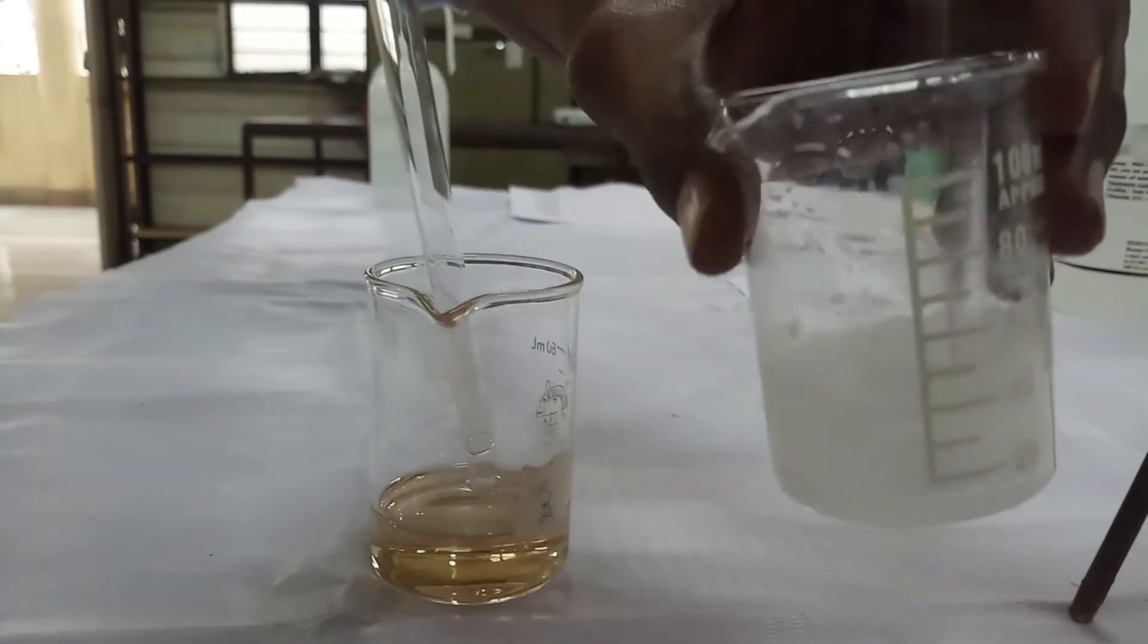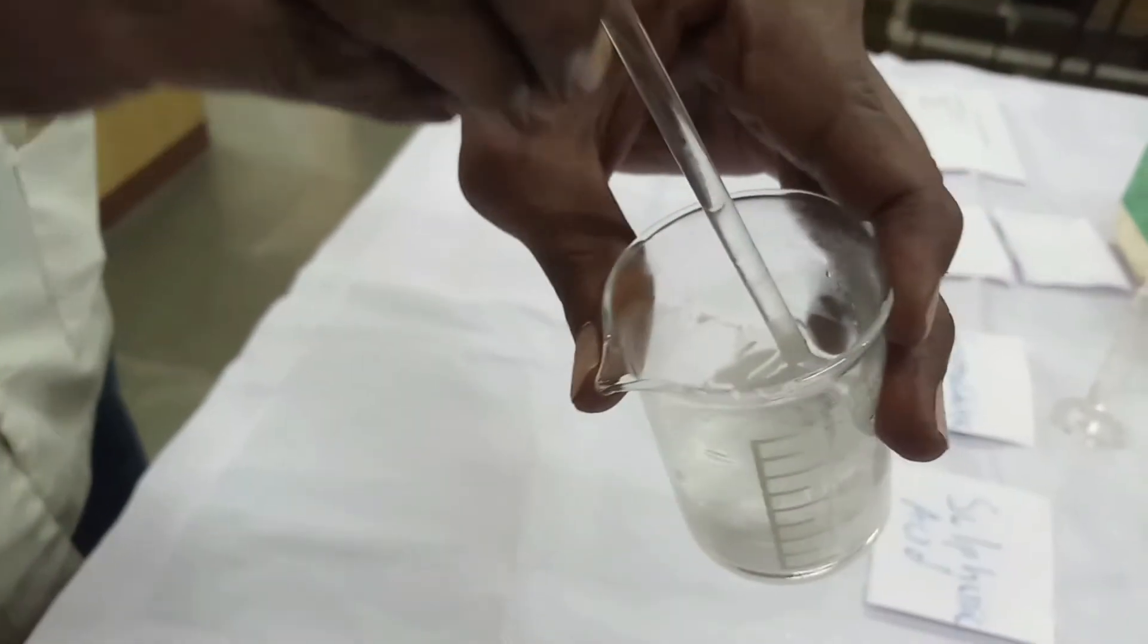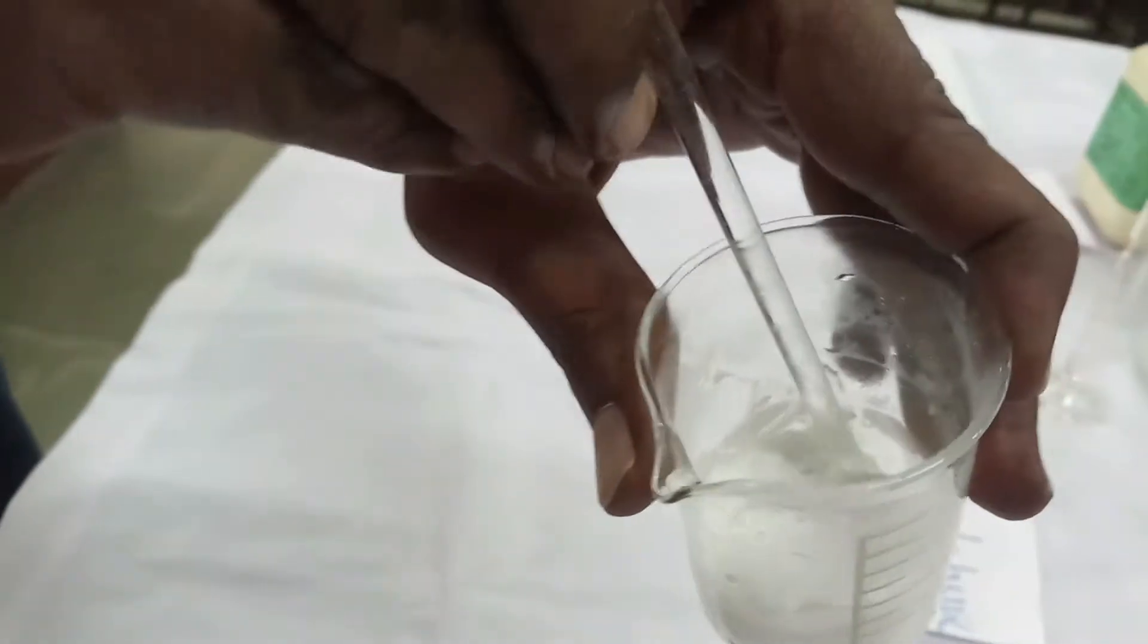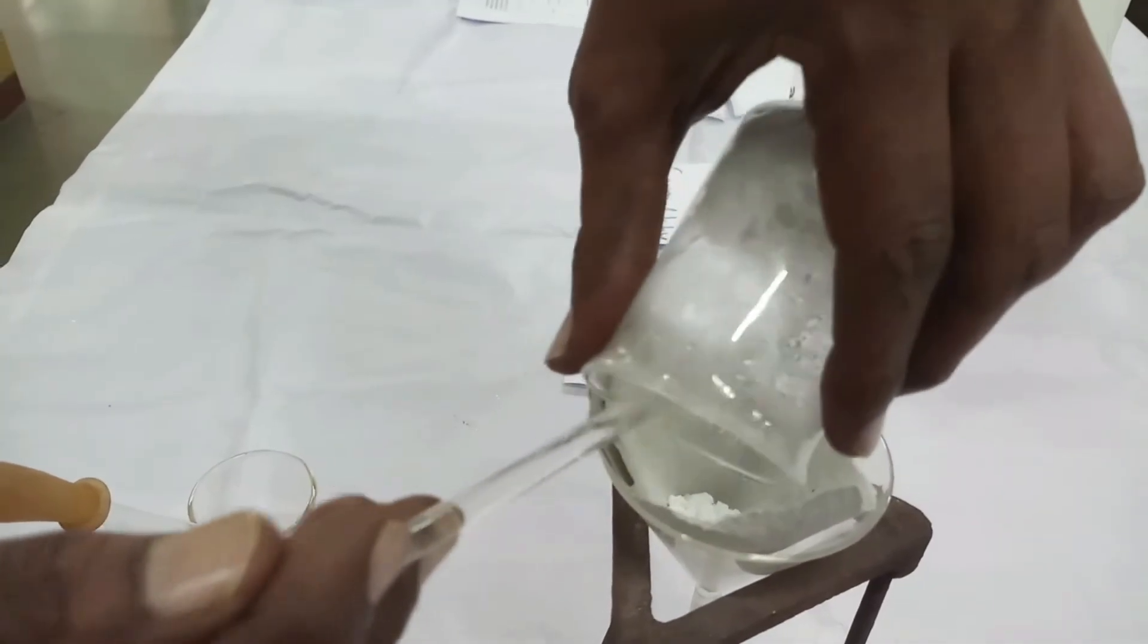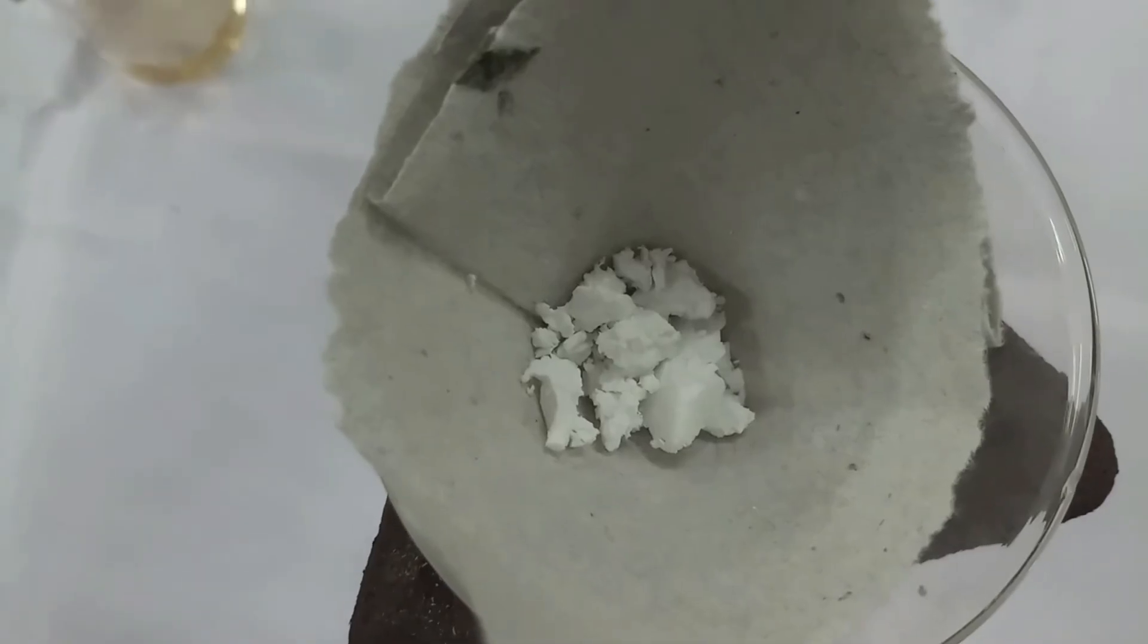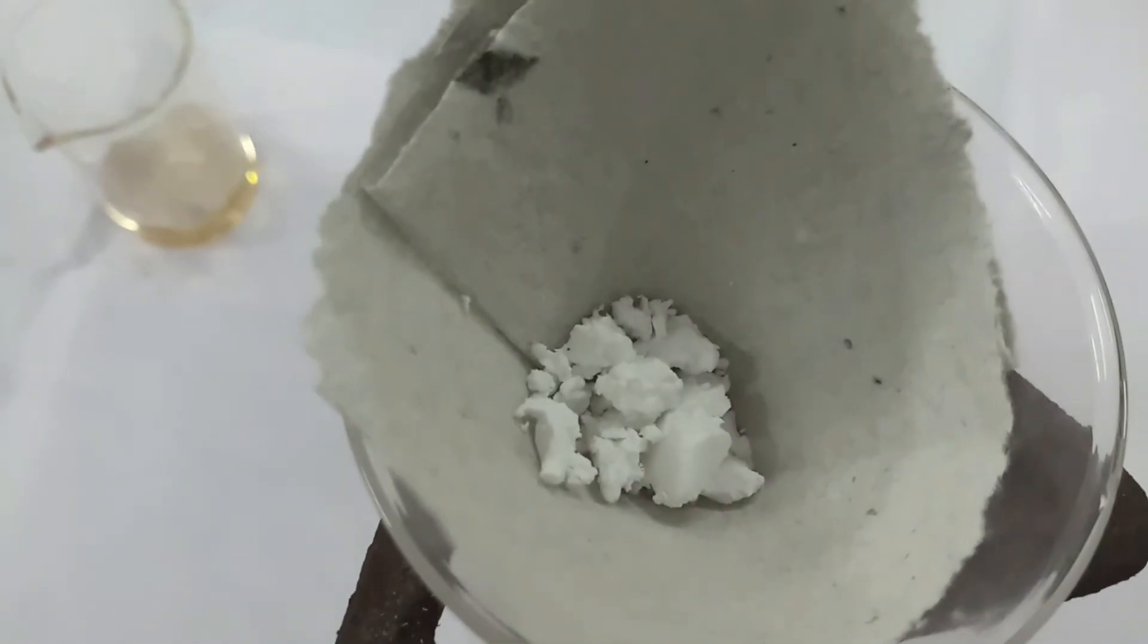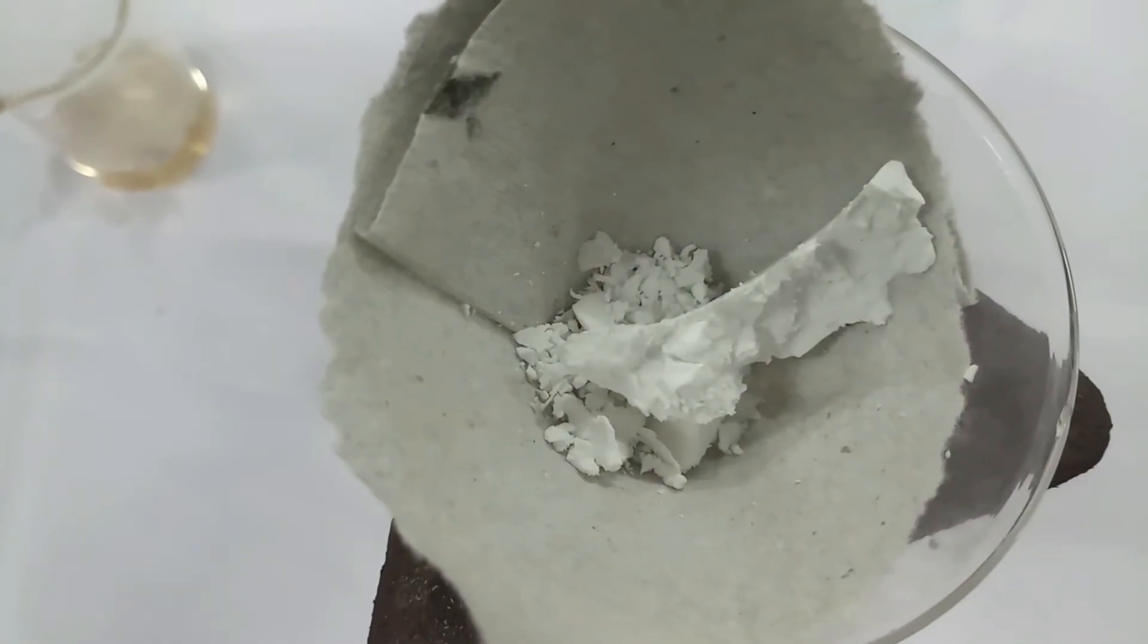When the reaction is complete, wash the residue with water and dry the product. You can see the white voluminous product. This is nothing but urea formaldehyde resin. It is preferred that this reaction be carried out in a fuming cupboard.